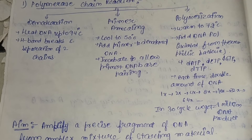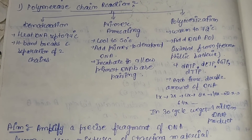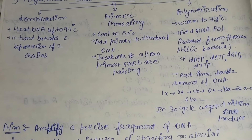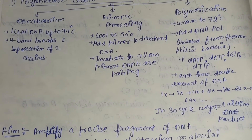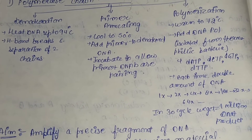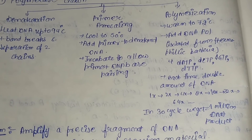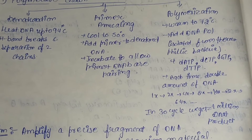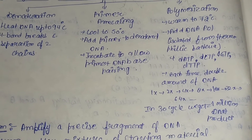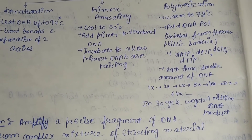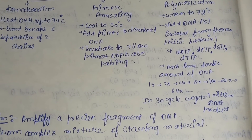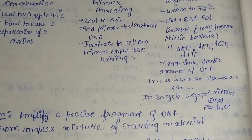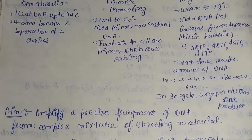Next is primer annealing — cooling to 50 degrees Celsius, adding primer to the denatured DNA, then incubating to allow primer-DNA base pairing. Finally, polymerization — warming to 72 degrees Celsius and adding DNA polymerase enzyme isolated from thermophilic bacteria. Each cycle doubles the amount of DNA; after 30 cycles, approximately 1 million DNA products are obtained. PCR is used for this amplification purpose.